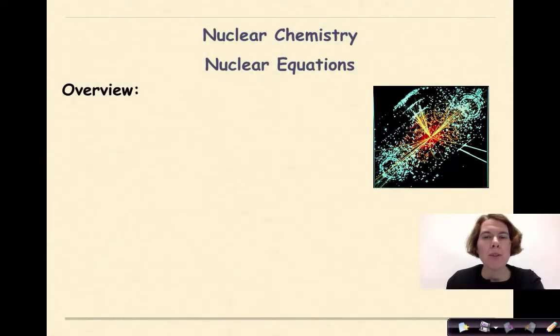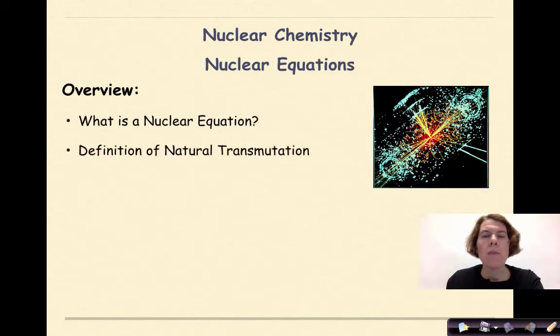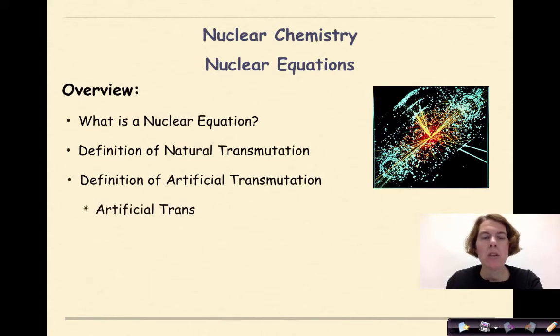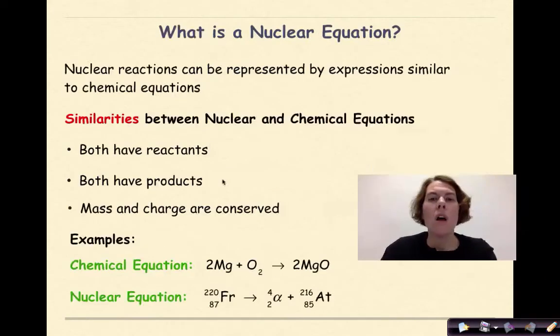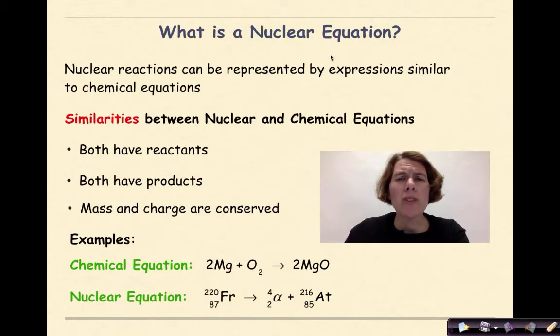Hi, welcome to nuclear chemistry. My name is Dr. English. Today we're going to be talking about different types of nuclear equations, specifically what is a nuclear equation, the definition of natural transmutation, the definition of artificial transmutation, artificial transmutation with a charged particle, artificial transmutation with a neutral particle, and finally some practice problems with transmutation.